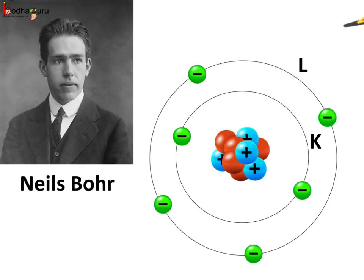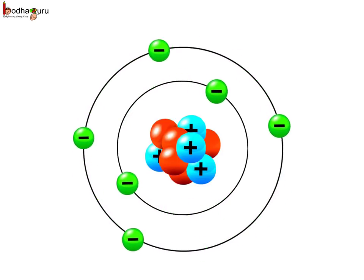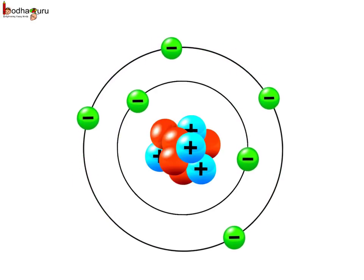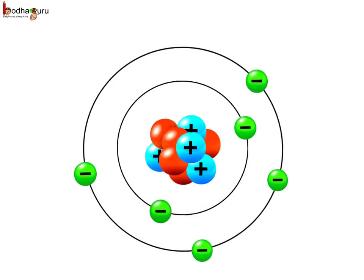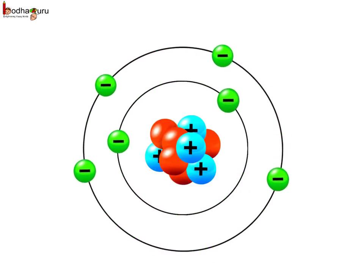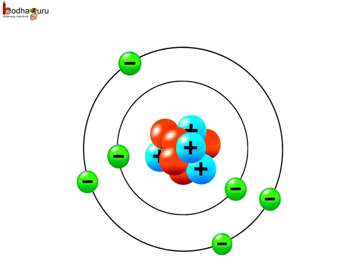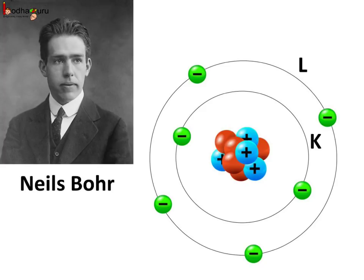Niels Bohr corrected the flaws in Rutherford's model. He said electrons only revolve in certain special orbits. Electrons do not lose energy if they revolve in these orbits. We call these orbits as discrete orbits of electrons. See, in his model, orbits or shells are denoted by letters like K, L, M, N or numbers like N equal to 1, 2, 3, 4 and so on.